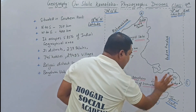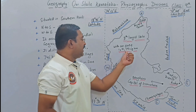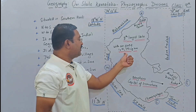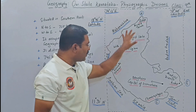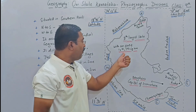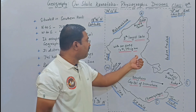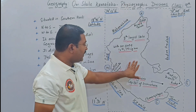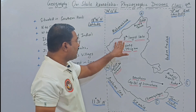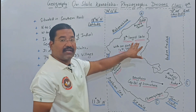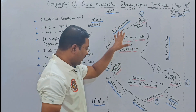The total area of Karnataka is 1,91,791 square kilometers. Out of the 28 states of India, Karnataka is the 8th largest state in the country.